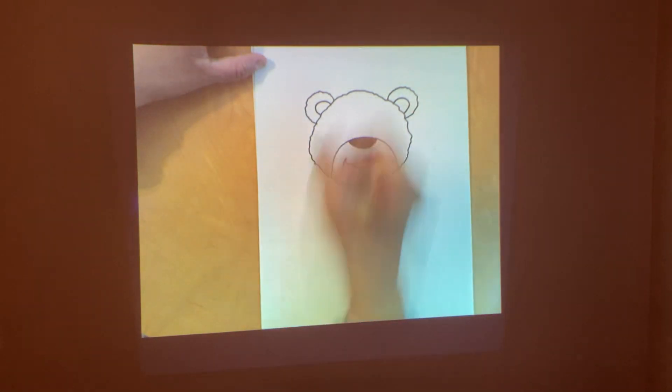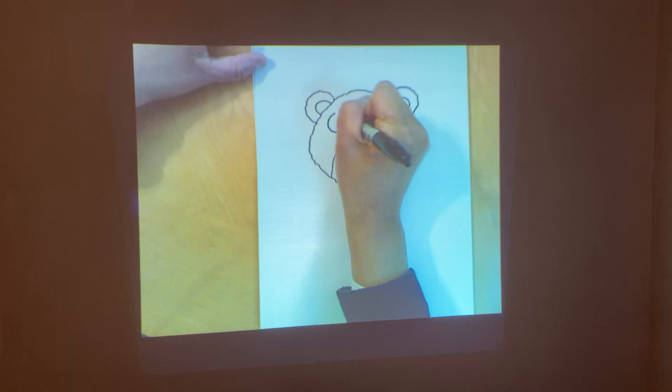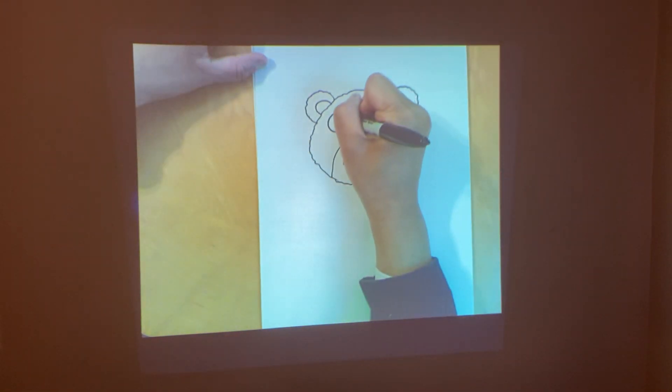And now the surprise. Draw one big eye and the smaller one. Alright, then draw two letter C's for the pupils and fill them in. And another one over here.